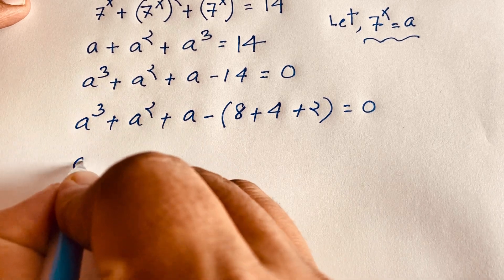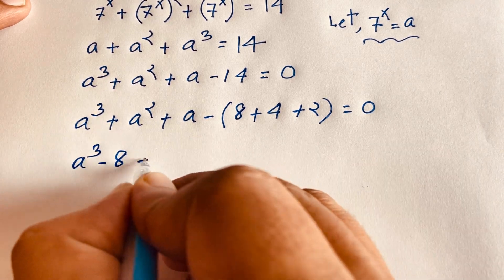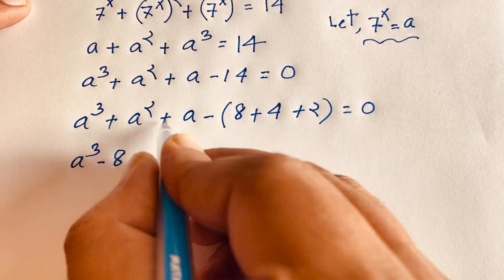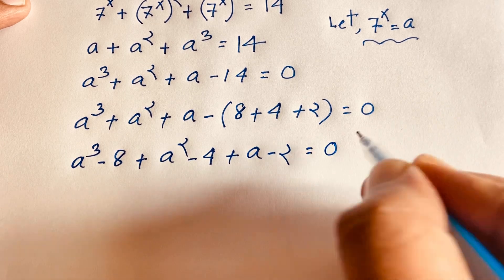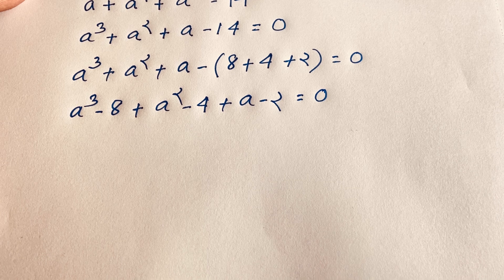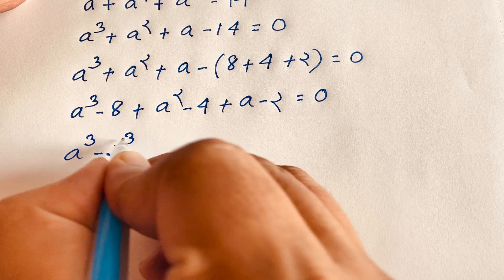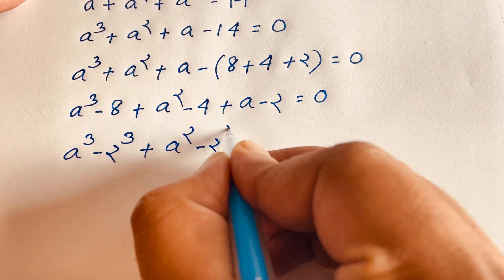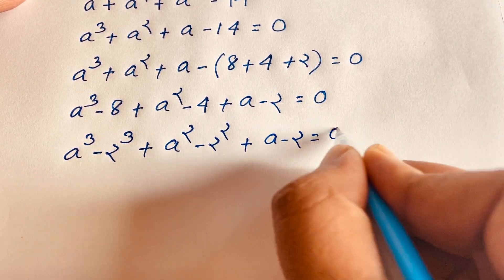Rewriting: a cubed minus 8, plus a squared minus 4, plus a minus 2, equals 0. Here, 8 is 2 cubed and 4 is 2 squared, so we have a cubed minus 2 cubed, plus a squared minus 2 squared, plus a minus 2, equals 0.